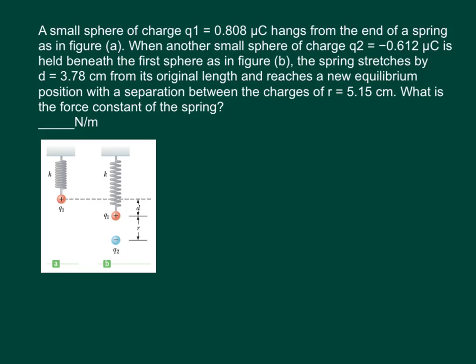Question 4 says a small sphere of charge Q1 equals 0.808 microcoulombs hangs from the end of a spring, as in figure A. When another small sphere of charge Q2 equals negative 0.612 microcoulombs is held beneath the first sphere, as in figure B, the spring stretches by 3.78 centimeters from its original length and reaches a new equilibrium position with the separation between the charges of 5.15 centimeters. What is the force constant of the spring?